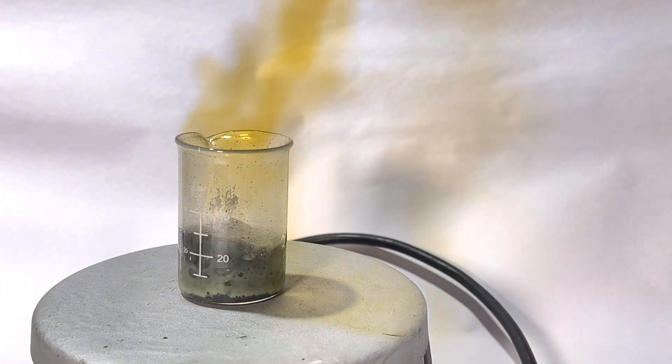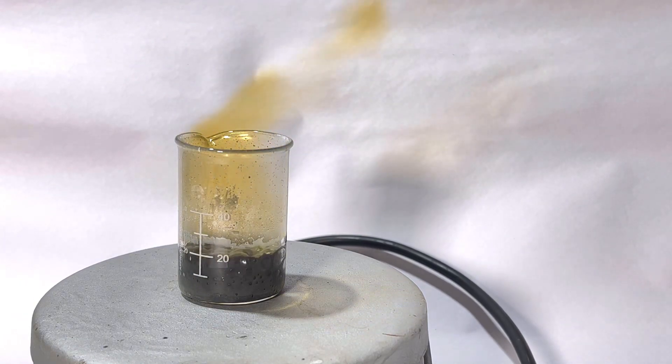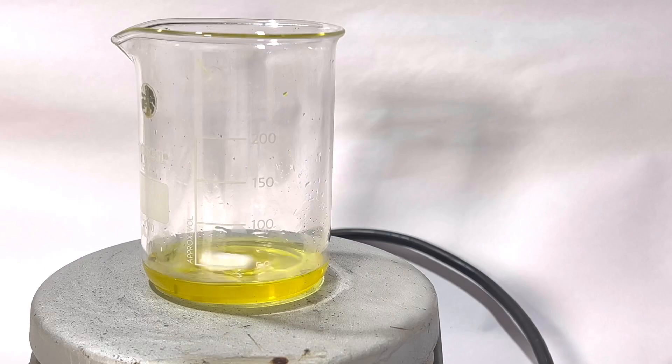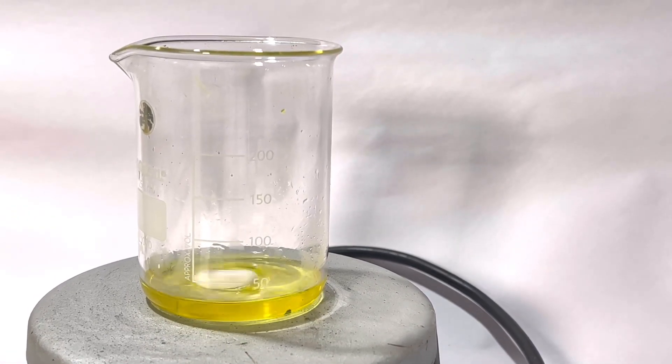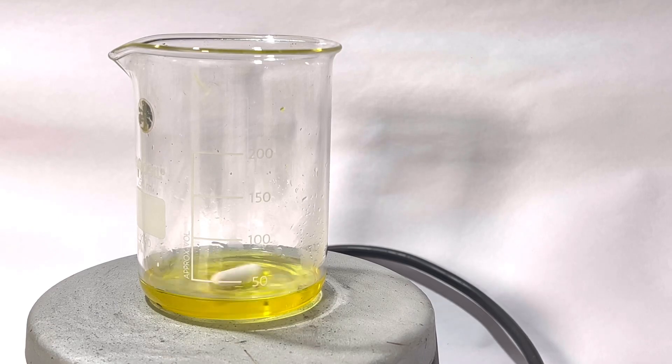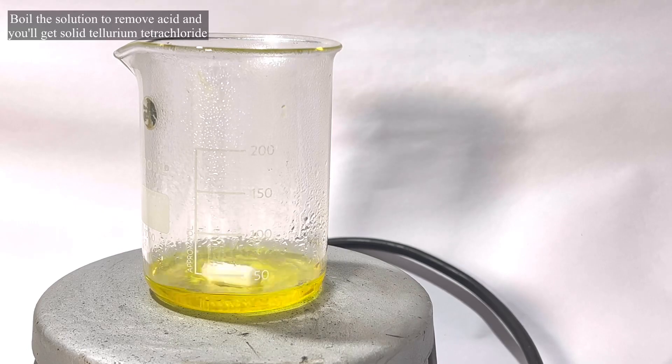Once around 20 milliliters of aqua regia was added, everything dissolved resulting in a clear yellow solution, and this is the tellurium tetrachloride solution. Now this solution was boiled down to get the crystals of tellurium tetrachloride, which will be used completely in the next step.